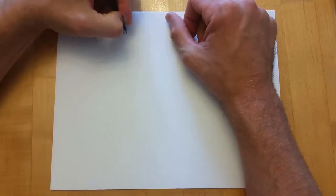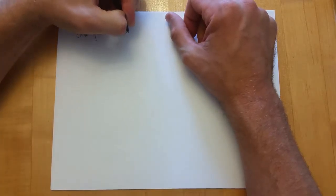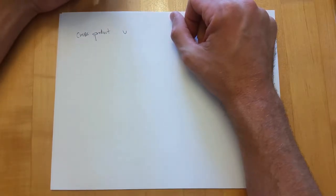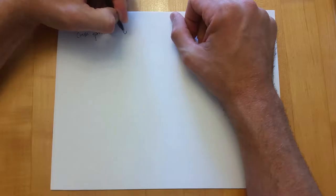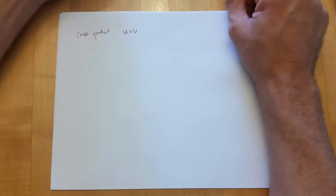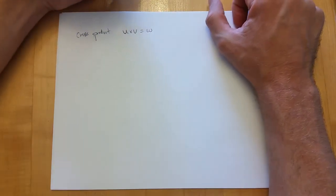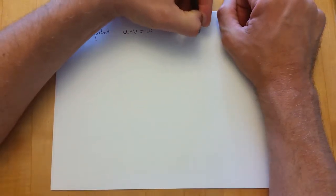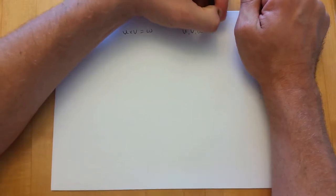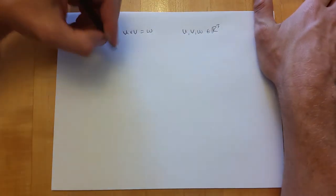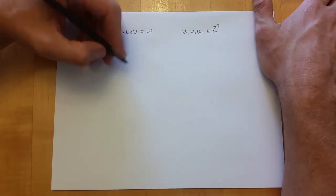If your vectors are parallel — either pointing the same direction as scalar multiples, or pointing opposite directions — then in either case, how many vectors are perpendicular to two parallel vectors? The answer is a lot. So the cross product will be the zero vector if they are parallel.